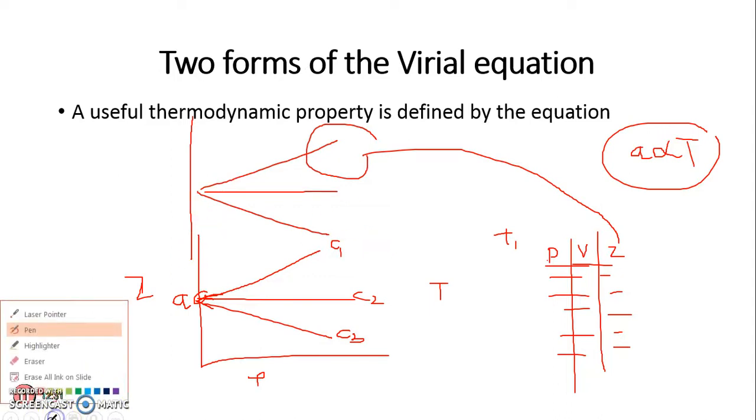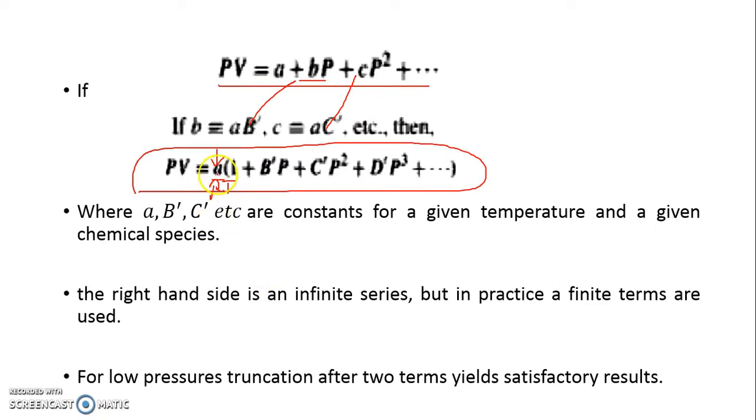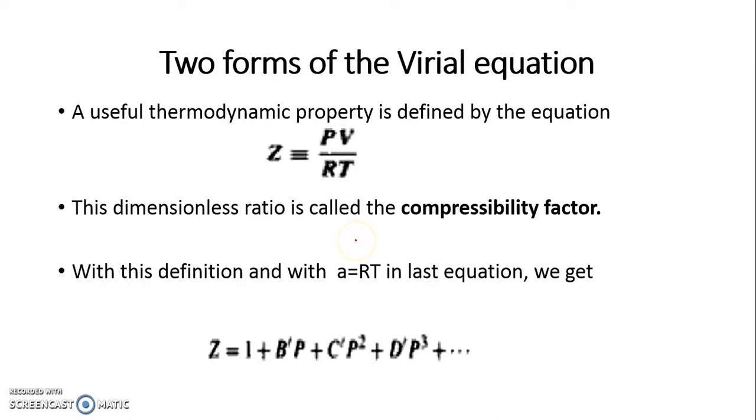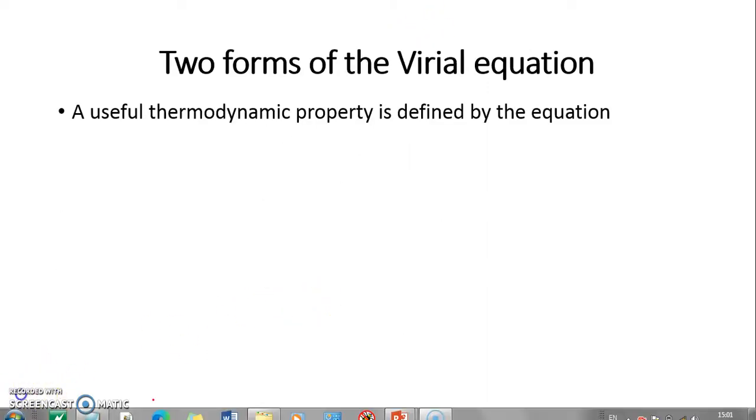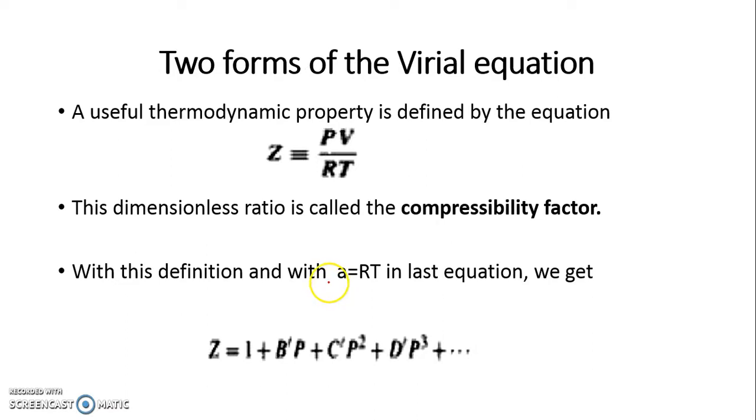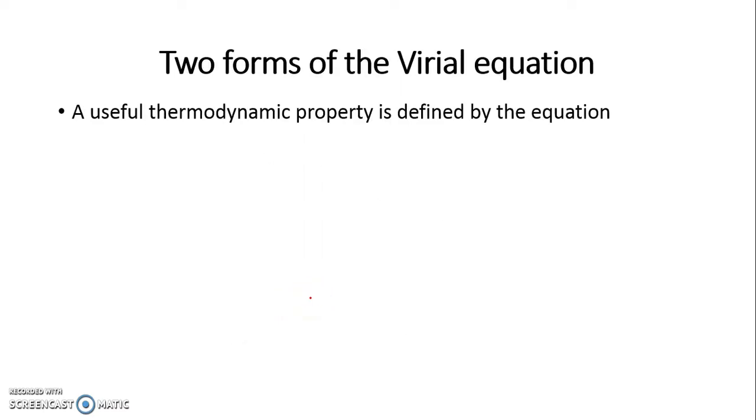When I substitute A equals RT, my equation becomes Z equals 1 plus B'P plus C'P² plus D'P³. Similarly, in the form of volume, because pressure and volume are inversely proportional to each other, we can write Z equals 1 plus B/V plus C/V² plus D/V³. So we have seen two equations.